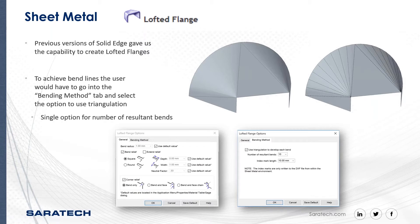Previous versions of Solid Edge gave us the capability to create locking flanges, but to achieve those bend lines the user would have to go into the bending method tab and then select the option to use triangulation and then the single option for the number of resultant bends.